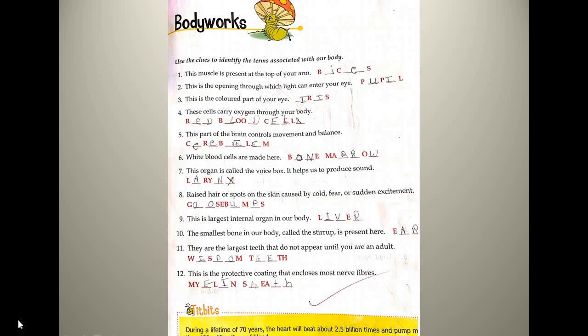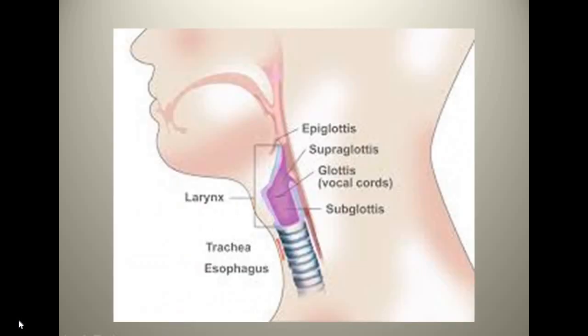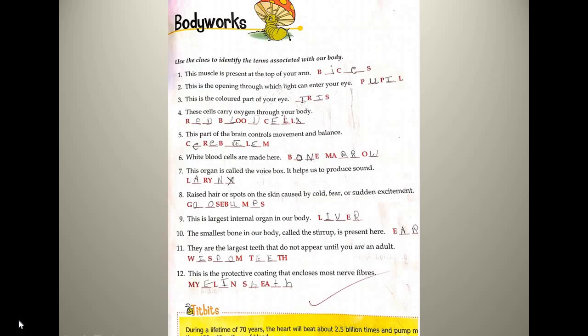The next question: this organ is called the voice box — it helps us to produce sound. The place from where the sound is produced is known as larynx and it is also known as the voice box. It is in your throat and from here only you can speak and the voice comes out. So the voice box from where the voice comes out is known as larynx.